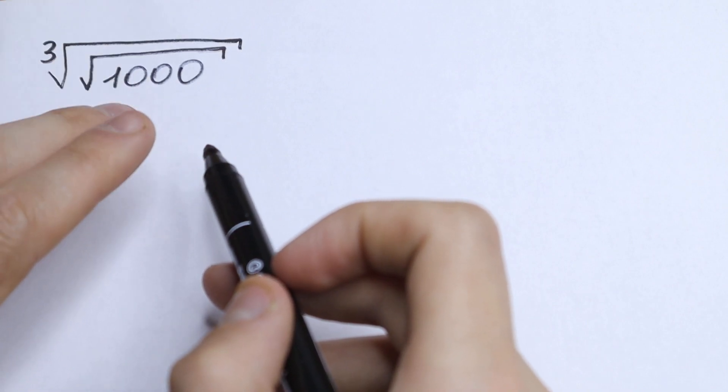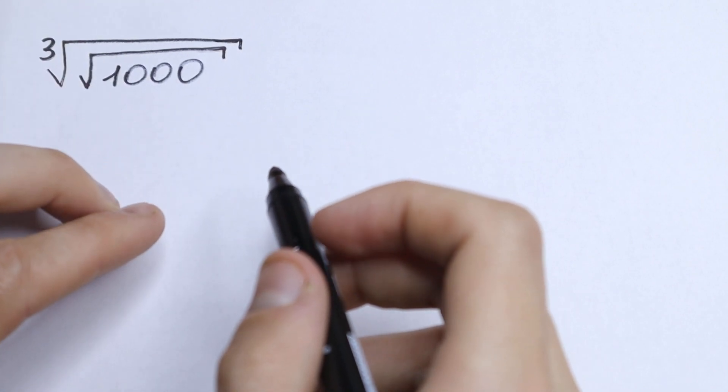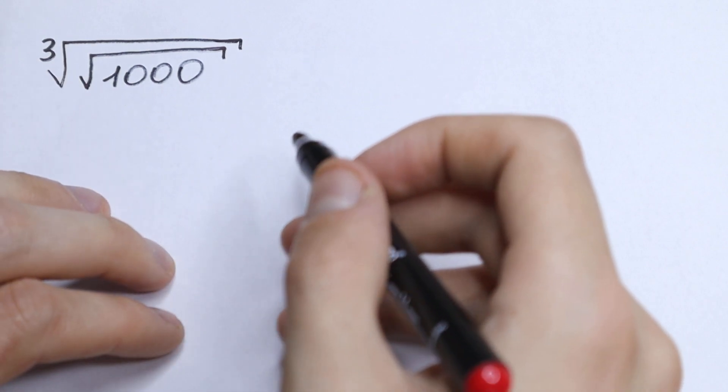We have cube root of square root of 1000. How can we solve it? I want to show you my approach. Take a look.